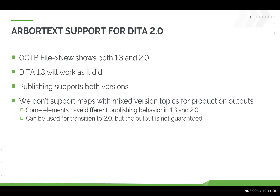DITA 1.3 support is unchanged, so it will work as it did. Publishing also supports both versions. The version of the top-level map that you're publishing will determine whether it publishes using the 1.3 logic or the 2.0 logic for certain elements, as certain elements have changed what their publishing behavior is. We don't technically support having maps that would have multiple versions in them — we don't prevent it, so you can publish that way. But in general, we wouldn't recommend that in a production output, because you'll find that the 1.3 topics might publish slightly differently than the 2.0 topics, depending on what the version of the top-level map is.